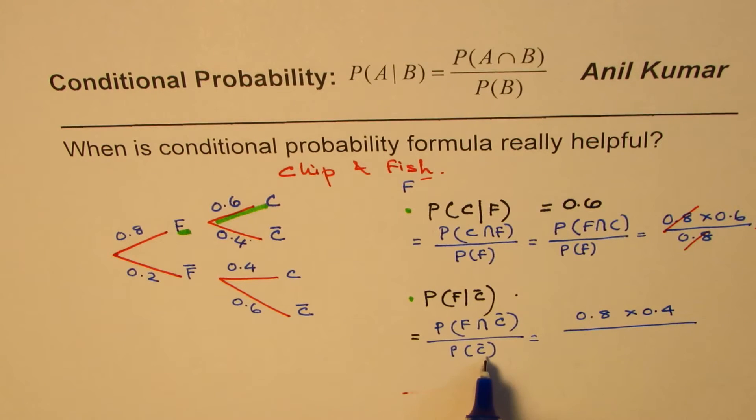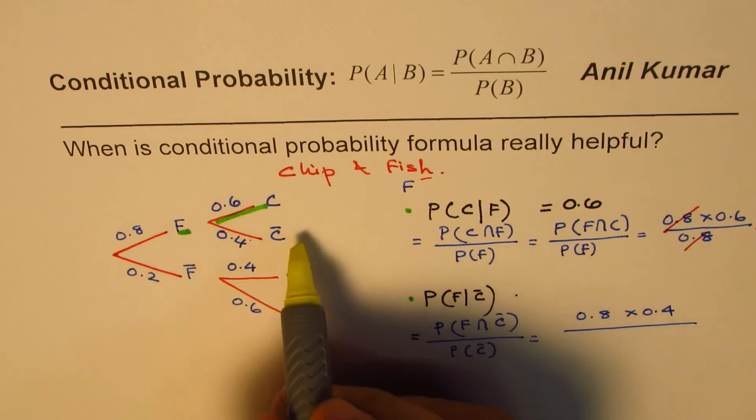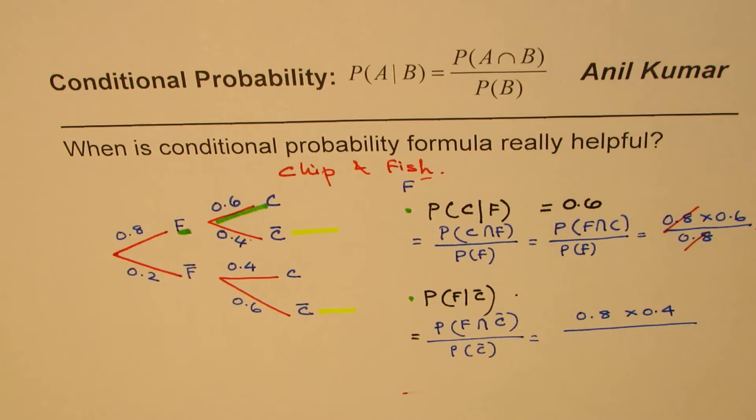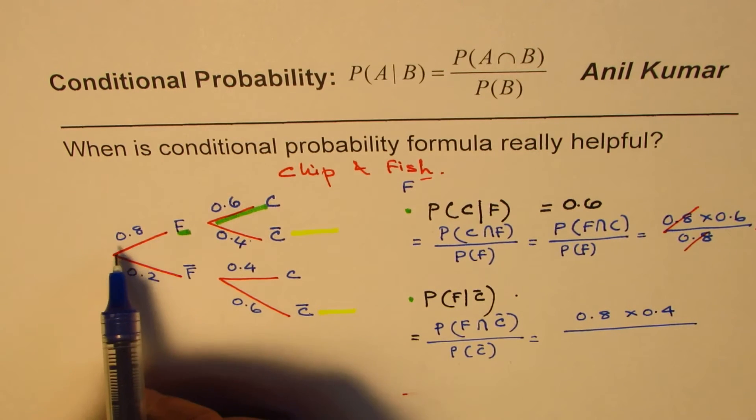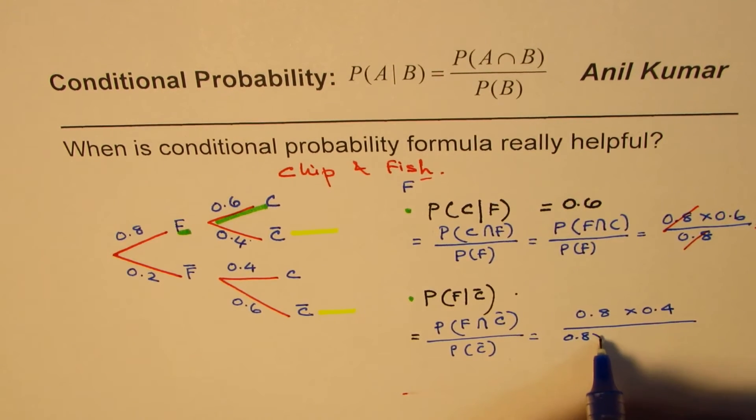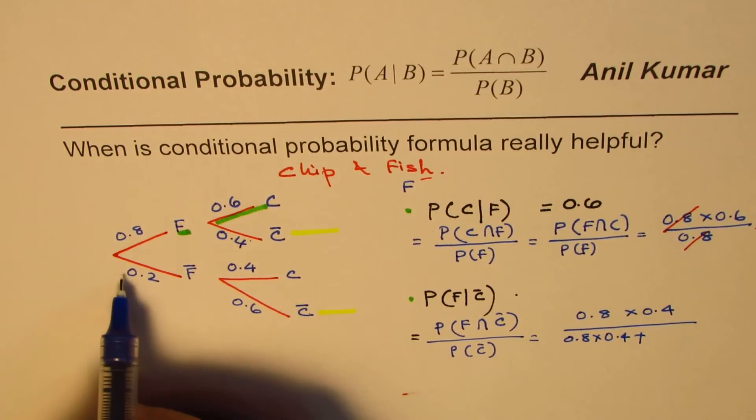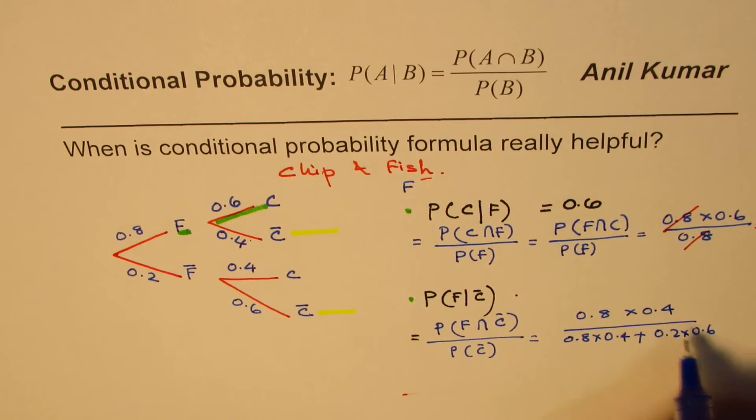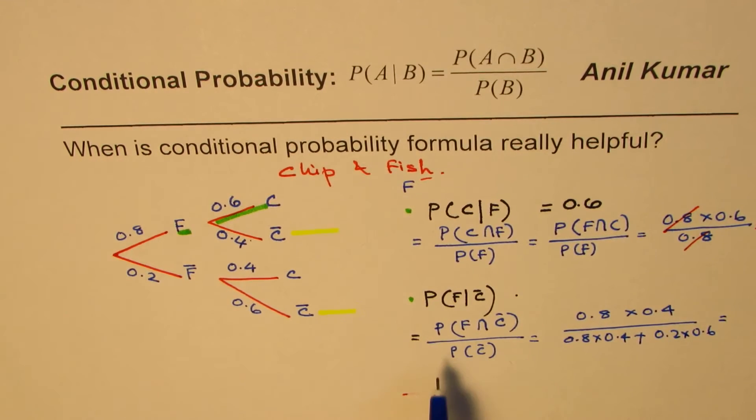So 0.8 times 0.4, divided by probability of not chips. So probability of not chips, we could find from here. These are the two ways. So these are the two ways. So we have to add them up. That is to say 0.8 times 0.4, plus 0.2 times 0.6.